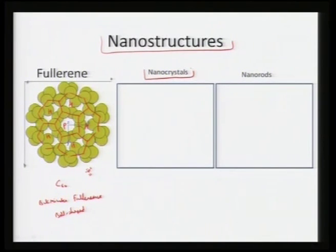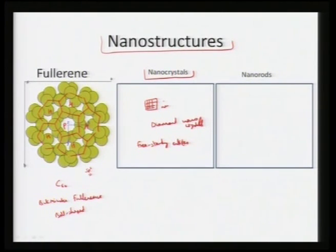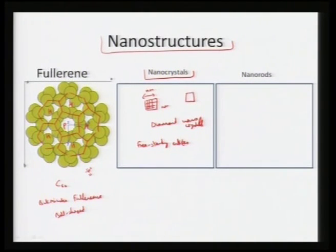We can also have nanocrystals — small crystals of the order of a couple of nanometers — such as diamond nanocrystals, which are free-standing entities existing as a monocrystalline unit. Nanocrystals have dimensions of a couple of nanometers along any one length scale. We can also have nanorods — nanocrystals can take any shape depending on their basic unit; for example, a tetrahedral basic unit might develop as a tetrahedral shape.